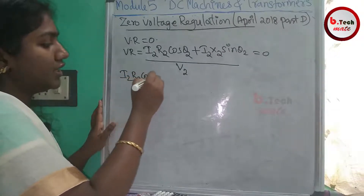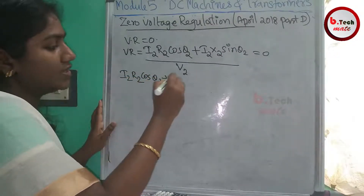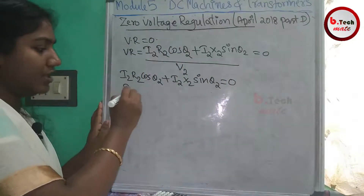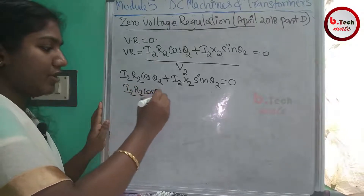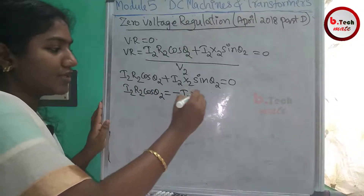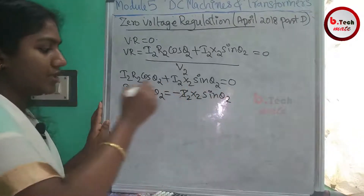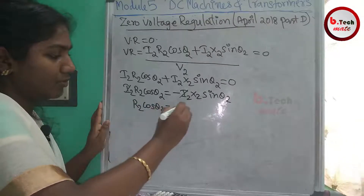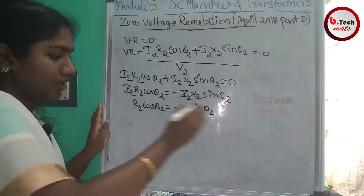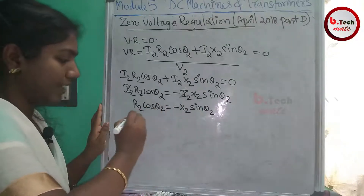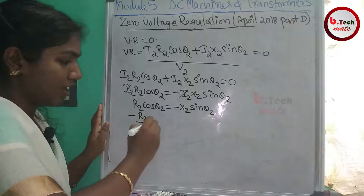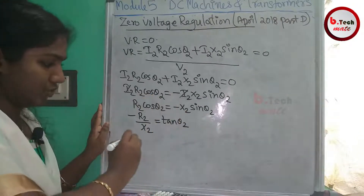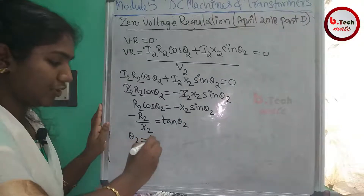Setting VR to zero gives: I₂R₂ cosθ₂ equals minus I₂X₂ sinθ₂. Dividing both sides, sinθ₂ over cosθ₂ equals minus R₂ over X₂, which means tanθ₂ equals minus R₂ over X₂.